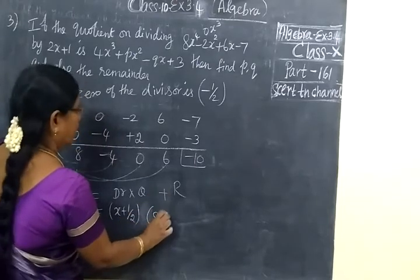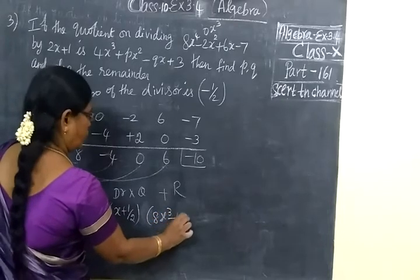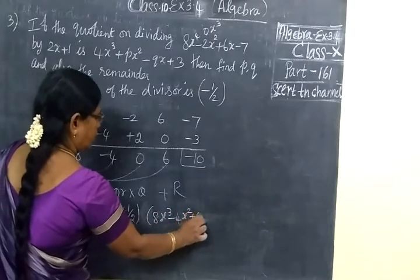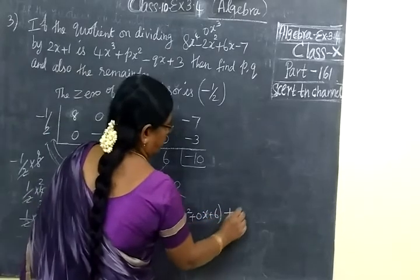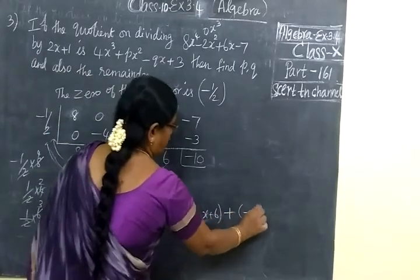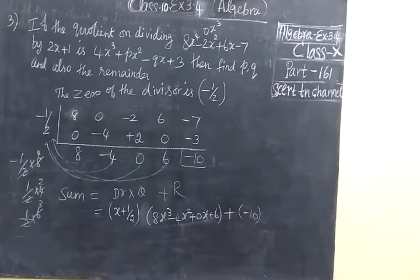So 8x cube minus 4x squared plus 0x plus 6 plus remainder minus 10. Once again we check the answer 8x cube minus 4x squared. This one is correct.